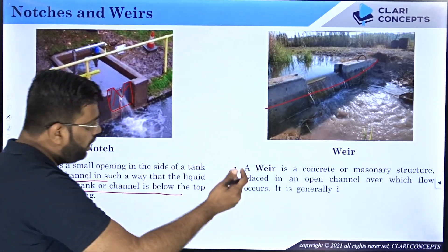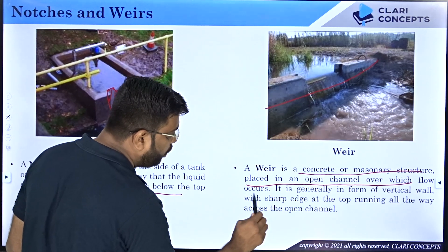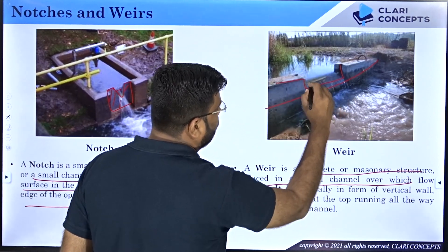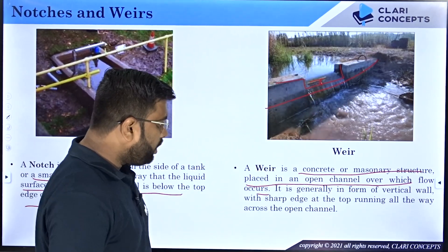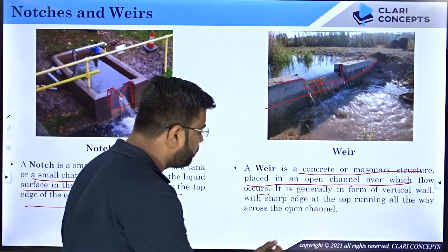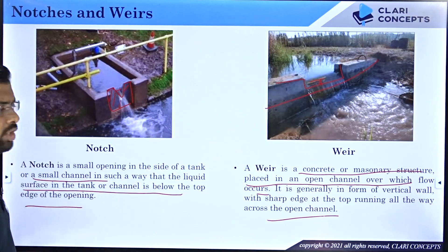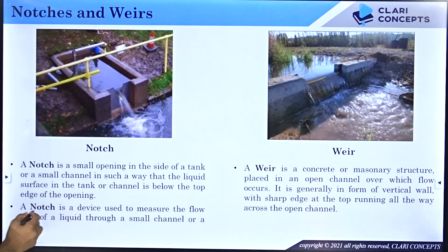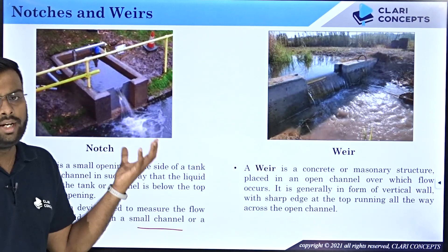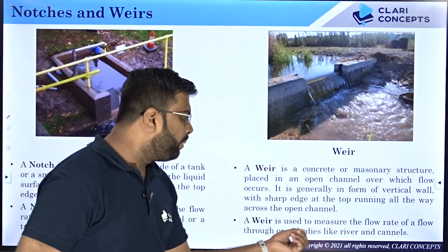A weir is a concrete or masonry structure placed in an open channel over which the flow occurs. It is generally in the form of a vertical wall with a sharp edge at the top, running all the way across the open channel. A notch is used to measure flow rate in small channels or tanks, while a weir is used to measure flow rate in large open water bodies like rivers and canals.